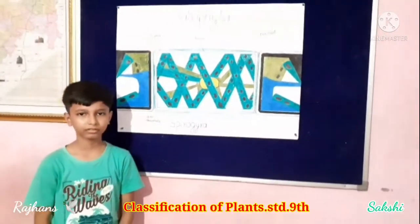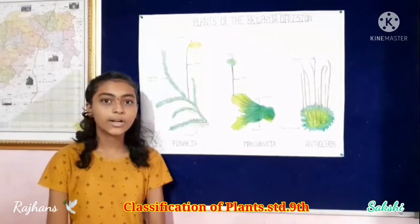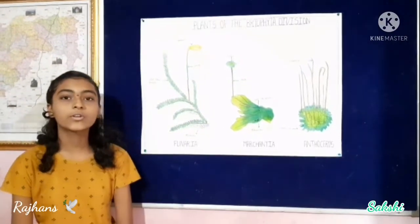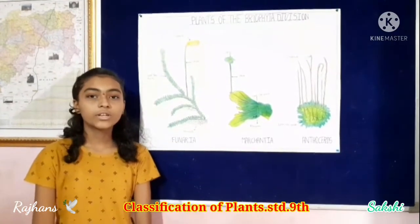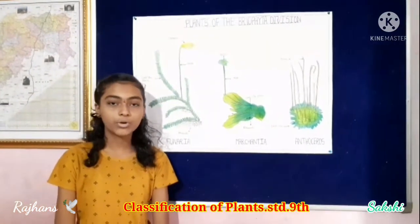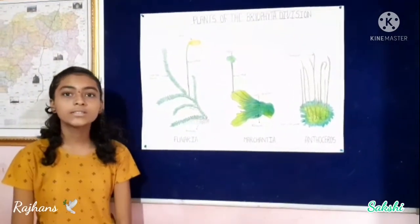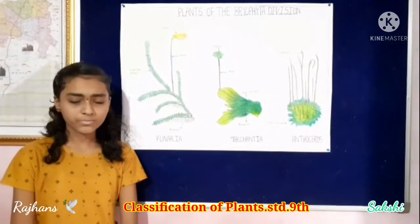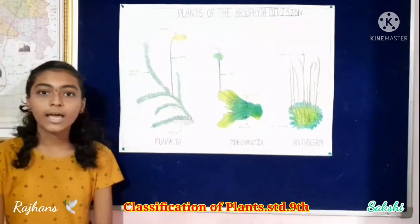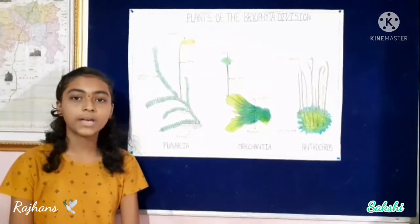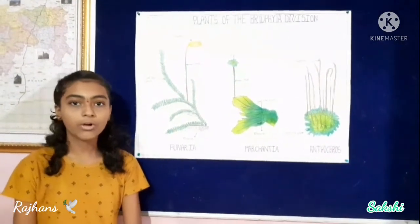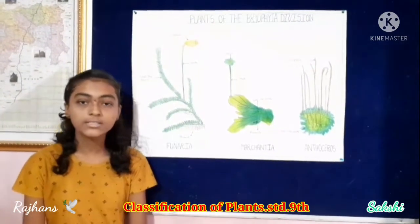This group of plants is called amphibians because they are in the plant kingdom and they grow in moist soil and they need more water for reproduction. These are thalloid, multicellular and autotrophic. They need spore formation and the structure of these plants is flat, ribbon-like, long, and with root-like rhizoids.